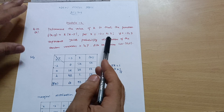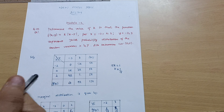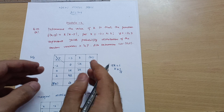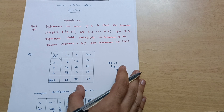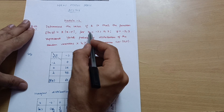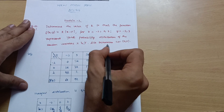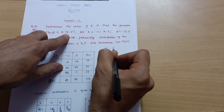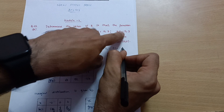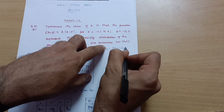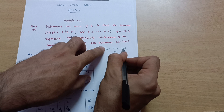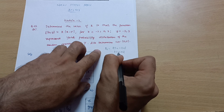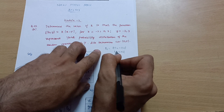Also determine the covariance of x and y. In the previous problem the probability distribution table was given, but in this problem we are supposed to make the distribution table ourselves. First, substitute the x and y values into the equation. For p11, take x = -2 and y = -2: k * |-2 - (-2)| = k * 0 = 0.